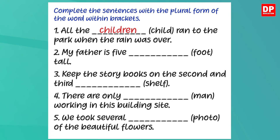The completed sentence is: 'All the children ran to the park when the rain was over.' The second sentence: 'My father is five ___ (foot) tall.' Here you have the vowel change, so the plural of foot is feet. 'My father is five feet tall.' The third sentence: 'Keep the storybooks on the second and third ___ (shelf).' The plural of shelf — it is a noun ending in f, so you change f into v and add es: shelves. 'Keep the storybooks on the second and third shelves.'